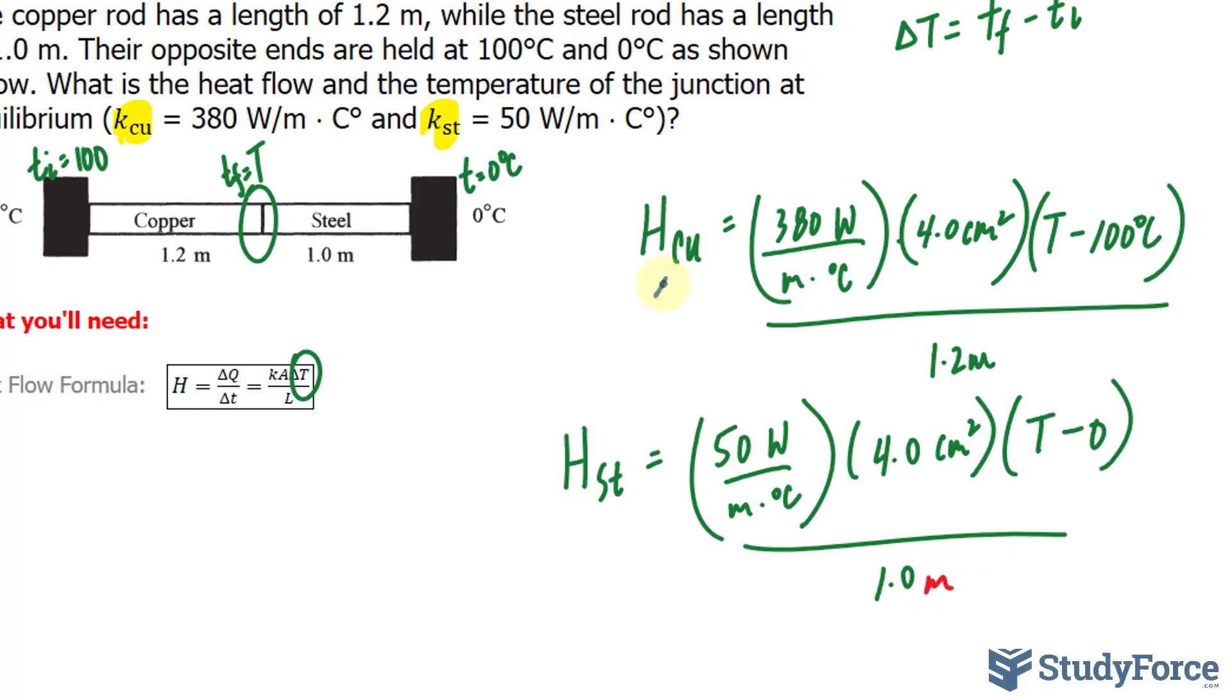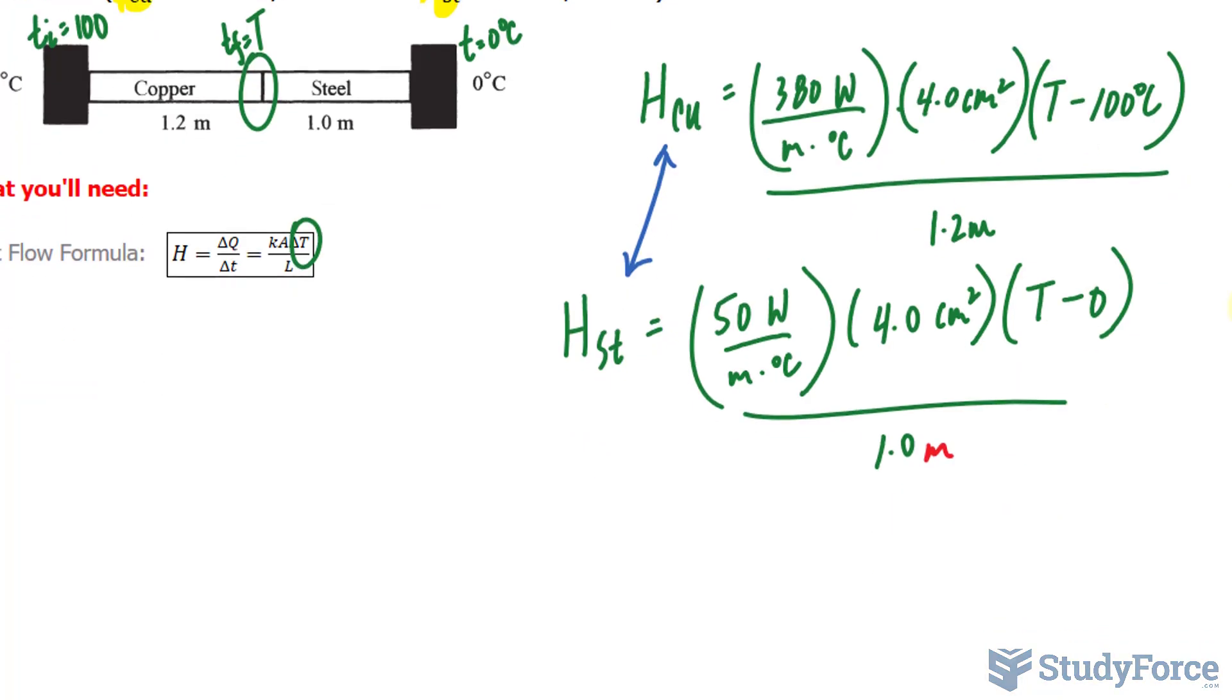The next thing that I'll do, since the heat flow is the same, is set these two expressions equal to one another. And in order for us to get the correct T value, since the copper is the one that is transferring its heat over to the steel, to solve this correctly and to get a value of T that's less than 100, we have to set this H value equal to negative.